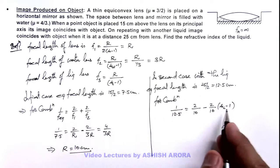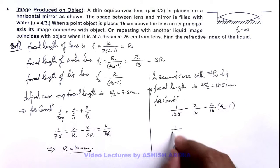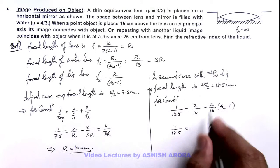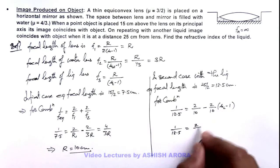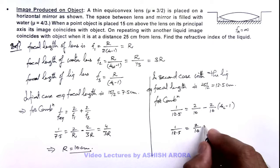We further simplify this, it will give us 1 by 12.5 is equal to - this is 2 by 10 - multiplied by, we take this common, this is 2 minus μ_l.